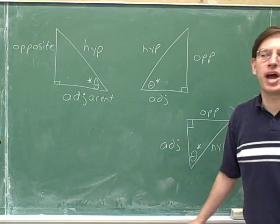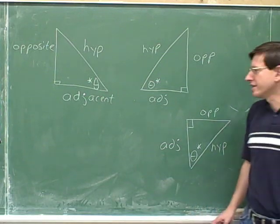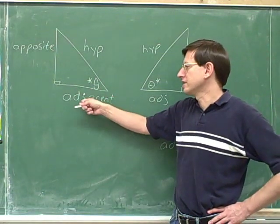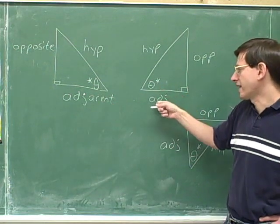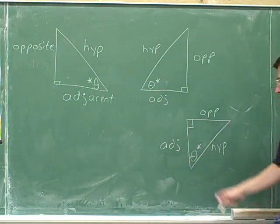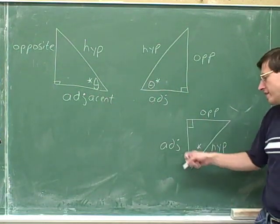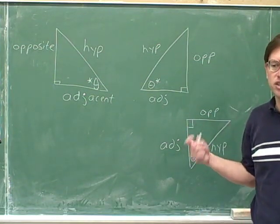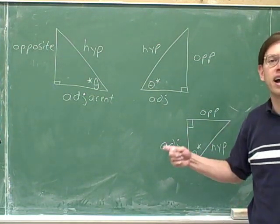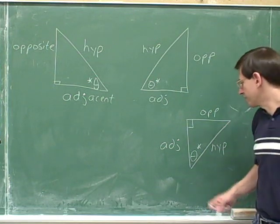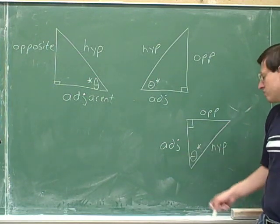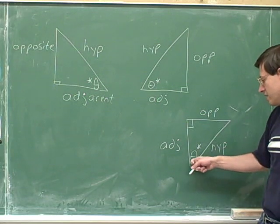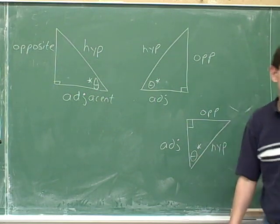I hope that you haven't been lulled into thinking that the adjacent side is always horizontal. In this triangle the adjacent side was horizontal, and in this triangle the adjacent side was horizontal. But in this triangle the adjacent side was vertical. So you can't just memorize which side is adjacent — you have to figure it out for each triangle. The adjacent side is vertical; just by looking at it, we can see that that's the side that is adjacent to this angle that we're focusing on.